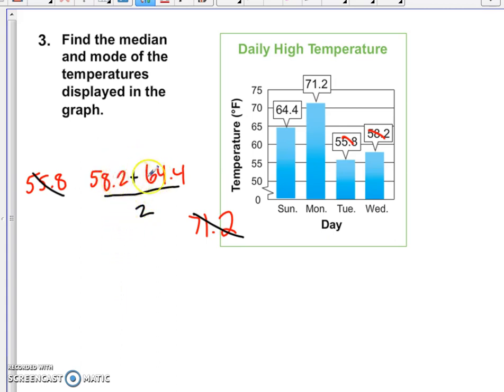Since we only have two numbers that we're going to add, we divide by 2. So I'm going to go ahead and figure out what 64 and 4 tenths plus 58 and 2 tenths is. 4 plus 2 is 6. 8 plus 4 is 12. 6 plus 6 is 12. So we have 122 and 6 tenths divided by 2.